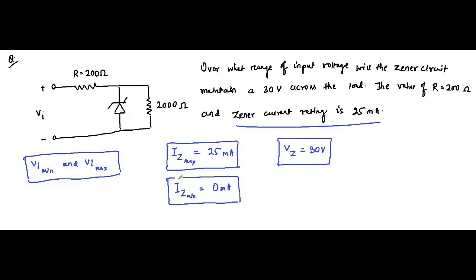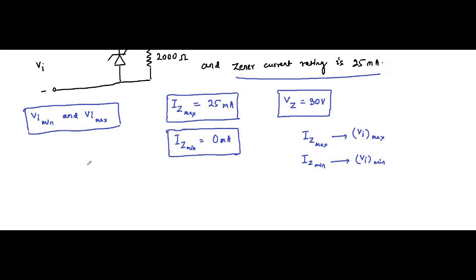To find the minimum voltage, we know that maximum Zener current is associated with maximum input voltage, and minimum Zener current is associated with minimum input voltage. The load voltage has to be maintained at 30 volt, the load resistance is constant at 2000 ohm, so the load current IL will also be constant: 30 volt divided by 2000 ohm equals 15 milliampere — a constant value of load current.